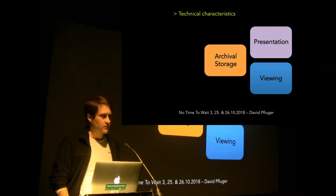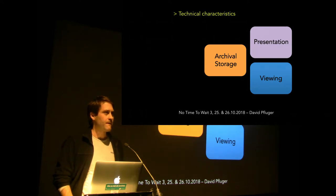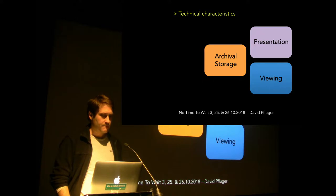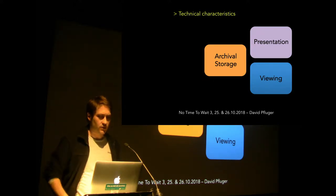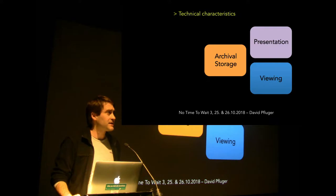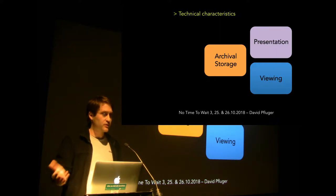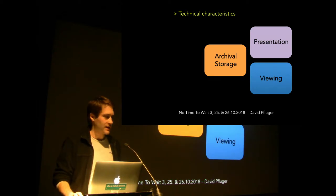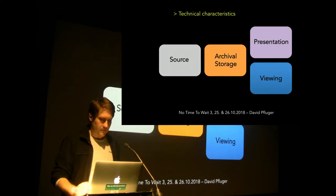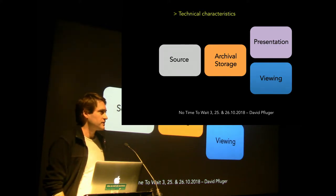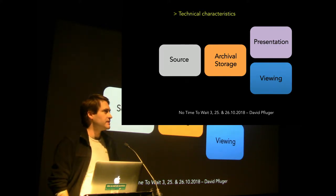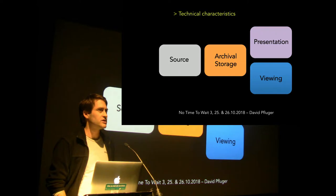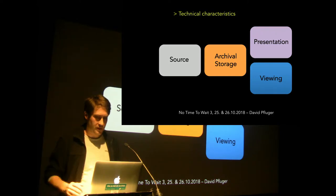When producing files within the archival context, we usually have three categories. The archival storage is kind of the core, where the digital archival files are produced and stored. At the same time, there will be files produced for presentation and for viewing, for access. Naturally, there's also the source, which in the case of digital born will be digital files, or tapes, or film, whatever.